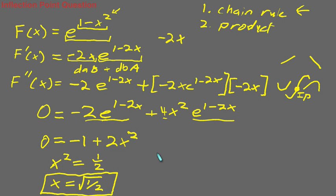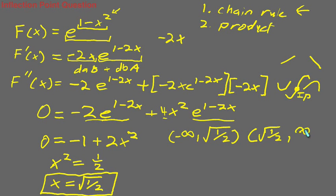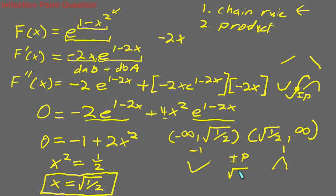To be very rigorous, you need to test ranges: from negative infinity up to the square root of one half, and from the square root of one half up to positive infinity. Take a test point in each interval — say negative 1 and 1 — and plug them into the equation to check the concavity. The inflection point is at x equals the square root of one half, but you should verify this yourself. I hope this lecture was useful.